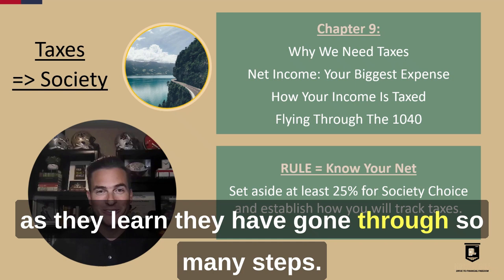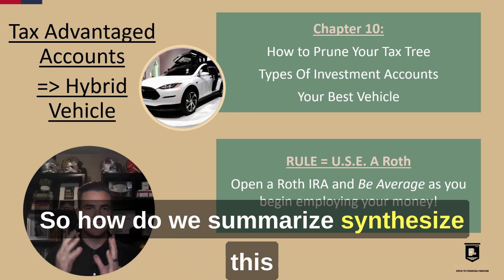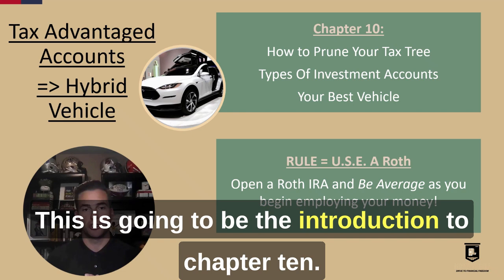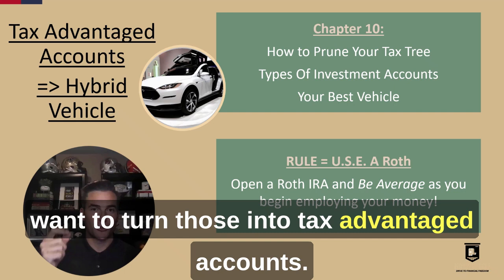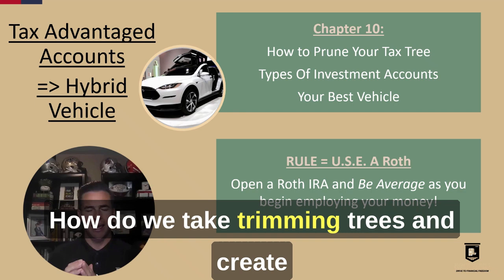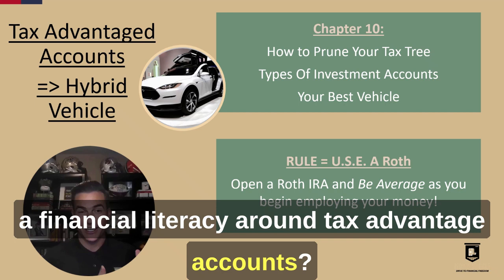They have gone through so many steps, so how do we summarize and synthesize this entire program into a single action? This is going to be the introduction to Chapter 10. When you look at your vehicle and want to make it more efficient or effective, you turn it into a hybrid vehicle. When we look at our money, we want to turn those into tax-advantaged accounts. We are storytellers building analogies — how do we take trimming trees and create financial literacy around tax-advantaged accounts? You'll see that in 10.1.